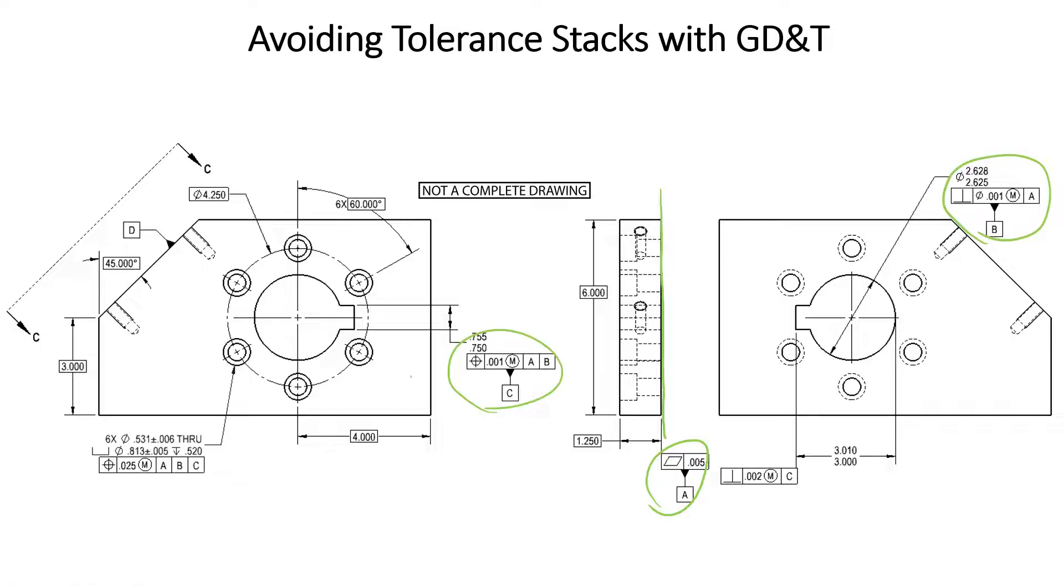Now that we've set up our datum reference frame, we can look at the position callout for the bolt hole right here. Now we know that the position callout is referencing datum feature A as primary, datum feature B as secondary, and datum feature C as tertiary.